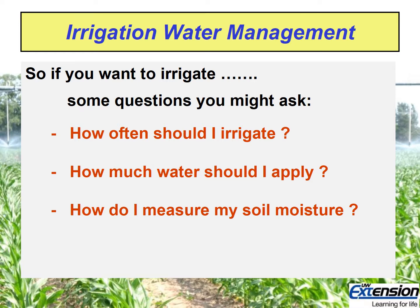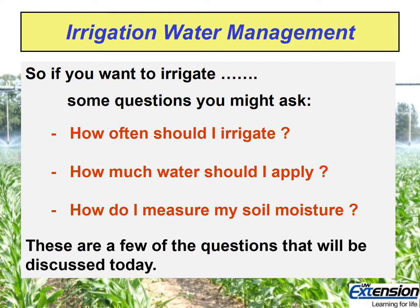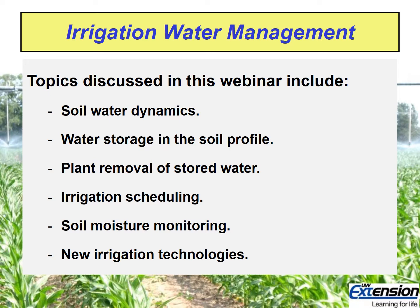If you want to irrigate, some questions you might ask are: How often should I irrigate? How much water should I apply? And how do I measure my soil moisture? Topics discussed in today's webinar include soil water dynamics, water storage in the soil profile, plant removal of stored water, irrigation scheduling, soil moisture monitoring, and some new irrigation technologies.